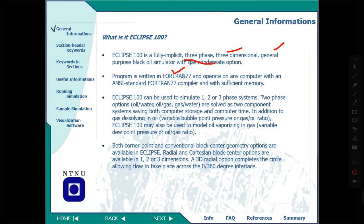This software was originally written in the Fortran language, though in this subject we are talking about Python. It can simulate any number of phases — one phase, two phase, or three phase. It has both the compositional option as well as the black oil option.